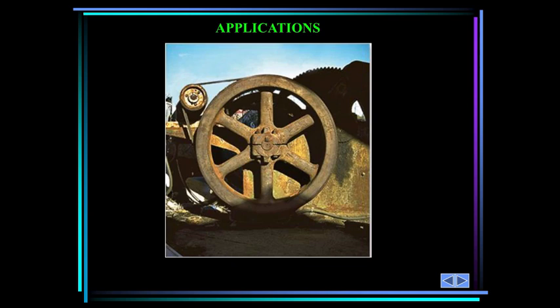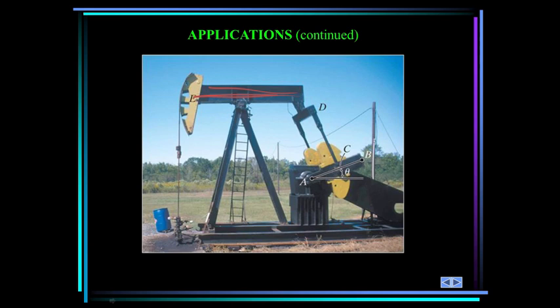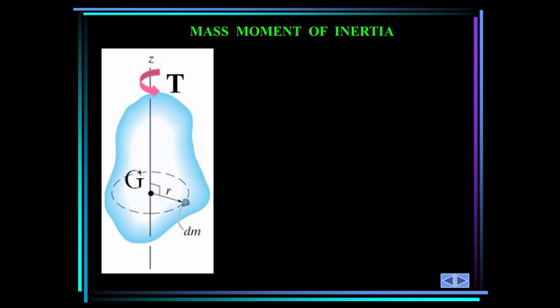The large flywheel you see here is connected to a large metal cutter. The flywheel mass is used to help provide a uniform motion to the cutting blade. What property of the flywheel is most important for this use? How can we determine the value for this property? Why is a lot of the mass located near the flywheel's circumference? The crank you see here on this oil rig undergoes rotation about a fixed axis. The crank develops a kinetic energy directly related to the mass moment of inertia. As the crank rotates, its kinetic energy is converted to potential energy and vice versa.